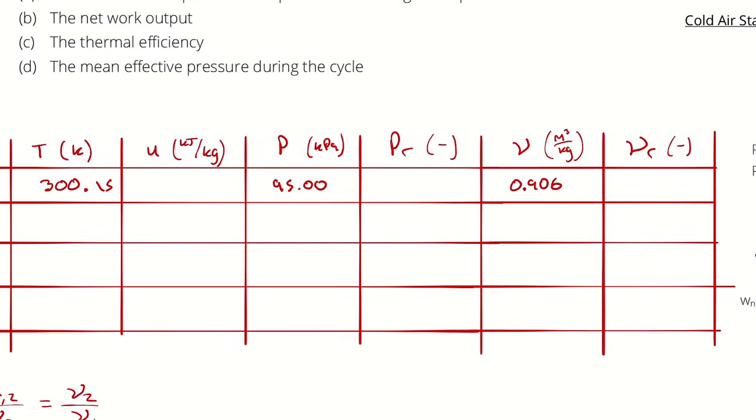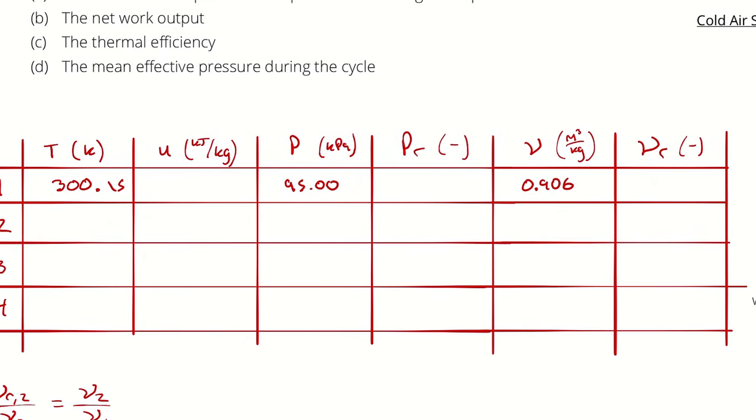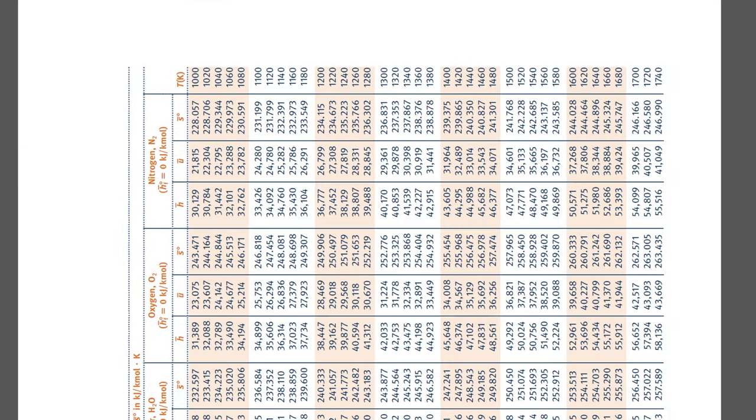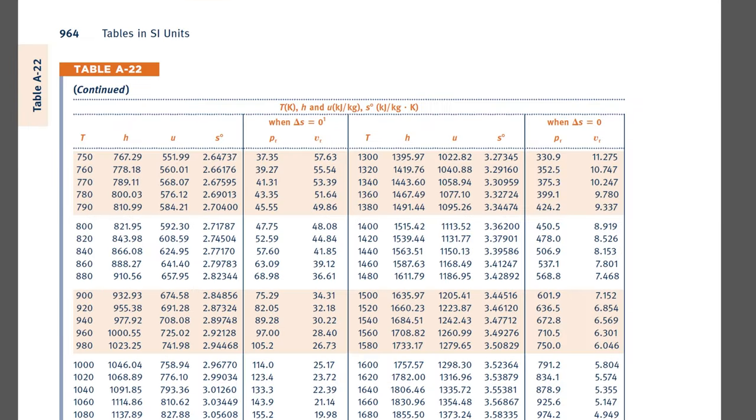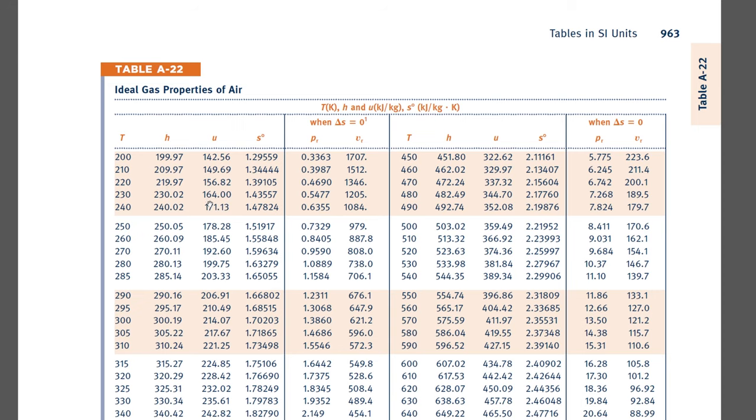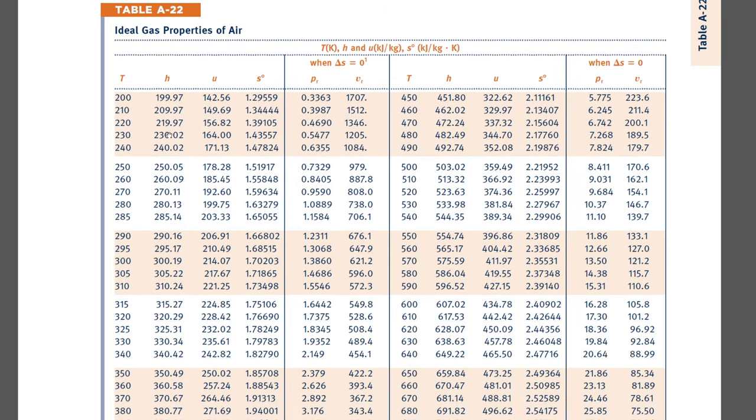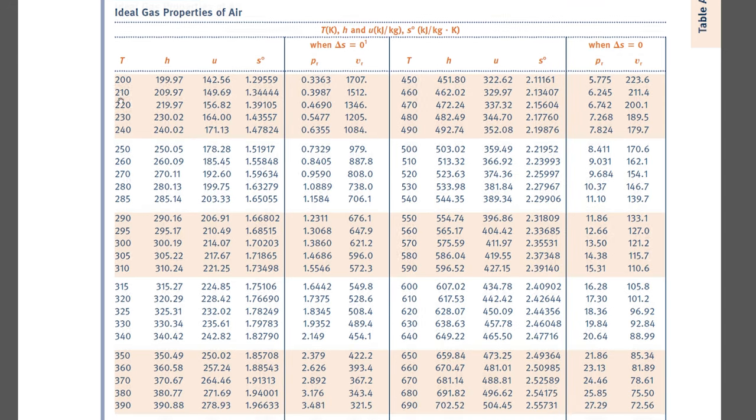To complete the other three columns in our table, I'm going to turn to our textbook table A22. Note that A22 is going to have enthalpy, internal energy, this zero-point entropy term, reduced pressure, and reduced volume as a function of temperature. But these are only functions of temperature, not pressure, so we don't have to worry about multi-dimensional data like we do for the steam tables. It's a one-dimensional table. It starts at 200 Kelvin and works its way down.